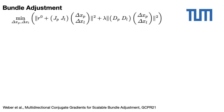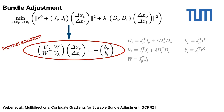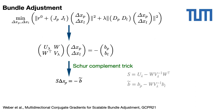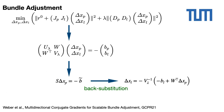Minimization leads to the corresponding normal equation. As the system matrix tends to be excessively costly for large-scale problems, it is common to reduce it by using the Schur complement trick and forming the reduced camera system. Once it has been solved, we back-substitute the pose delta to get the landmark delta.